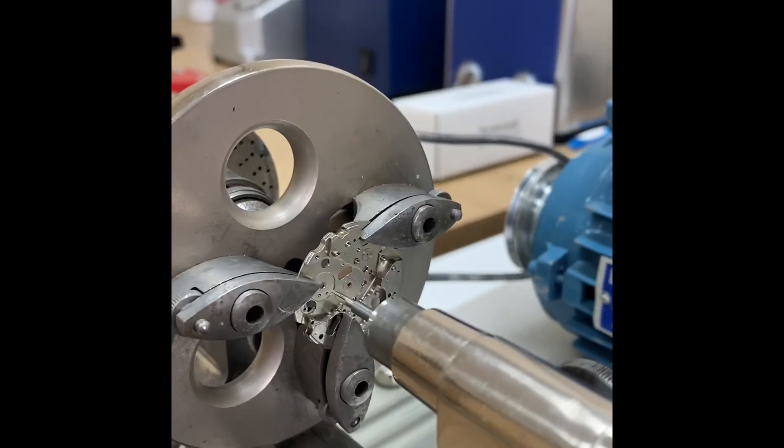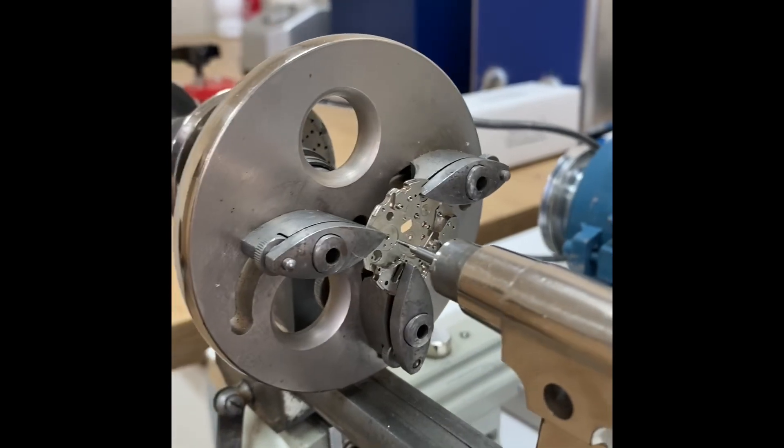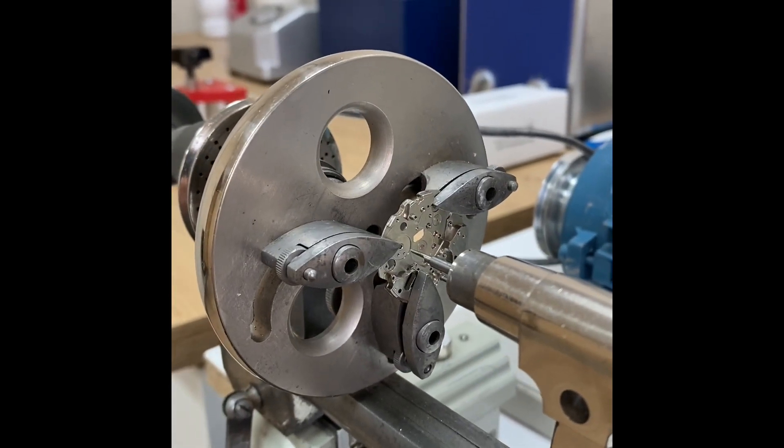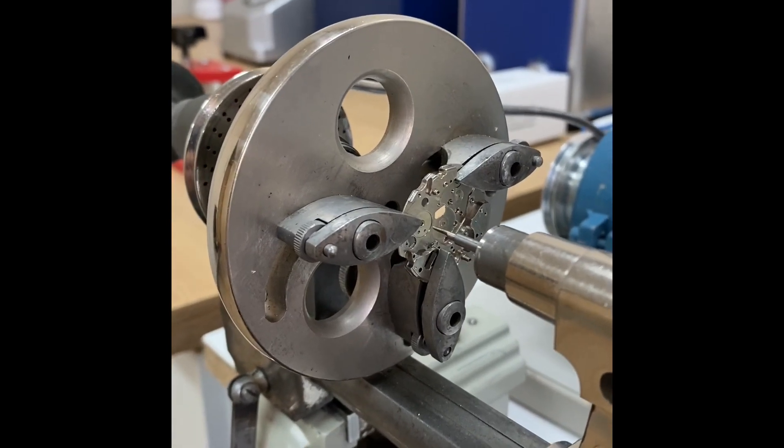This can also be done in the sights dueling tool, but for this demonstration we're going to do it in the lathe because it's really the most accurate way of drilling out the main plate.